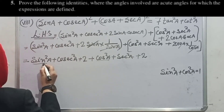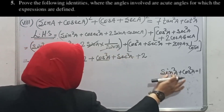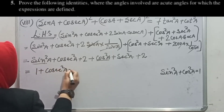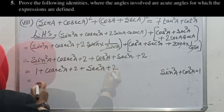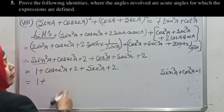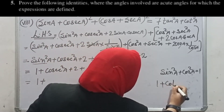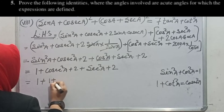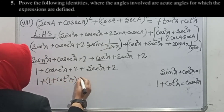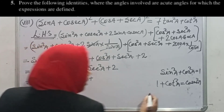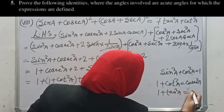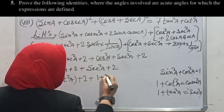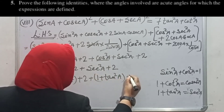Next, we rewrite cosec²A using the identity: 1 + cot²A = cosec²A. And we rewrite sec²A using: 1 + tan²A = sec²A. So cosec²A becomes (1 + cot²A) and sec²A becomes (1 + tan²A). Substituting these in, we now have: 1 + (1 + cot²A) + (1 + tan²A) + 2 + 2.